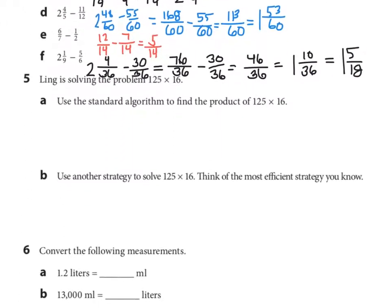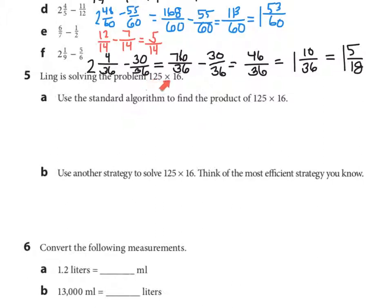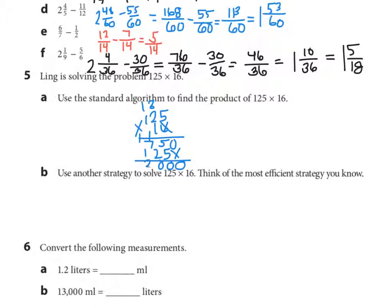Number 5: Ling is solving 125 times 16. Use the standard algorithm to find the product. So 5 times 6 is 30; 2 times 6 is 12 plus 3 is 15; 6 times 1 is 6 plus 1 is 7. Hold the place value: 5 times 1 is 5; 2 times 1 is 2; 1 times 1 is 1. Adding those up, the answer is 2,000.